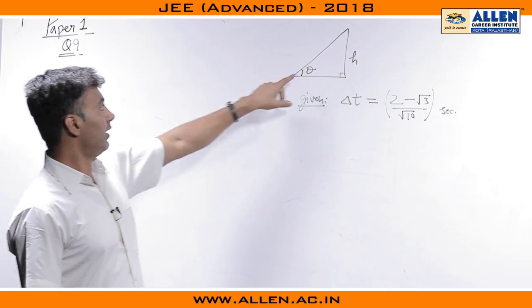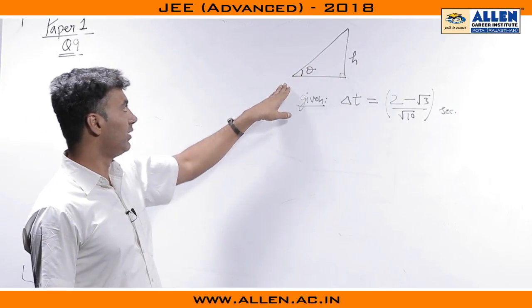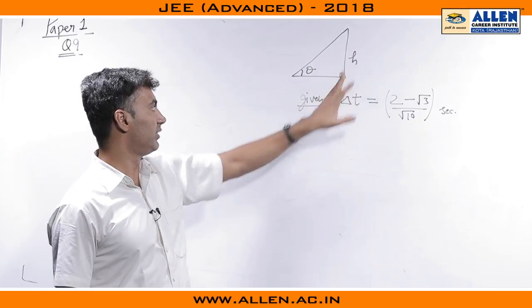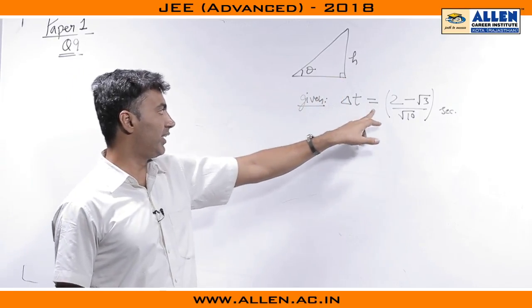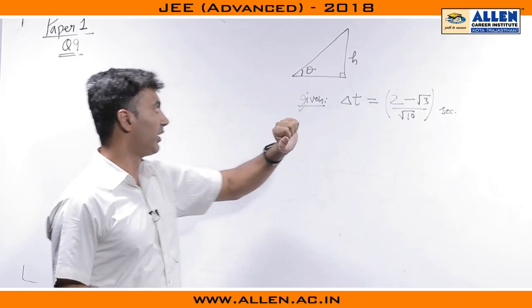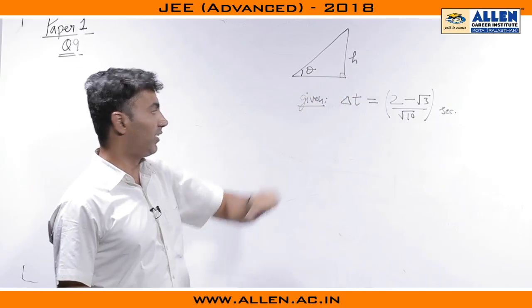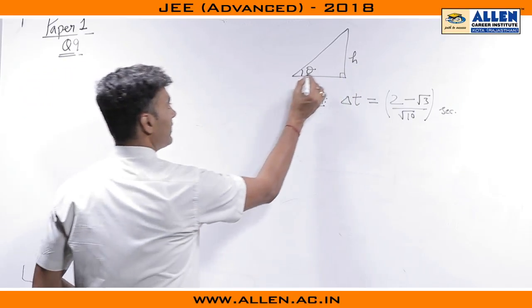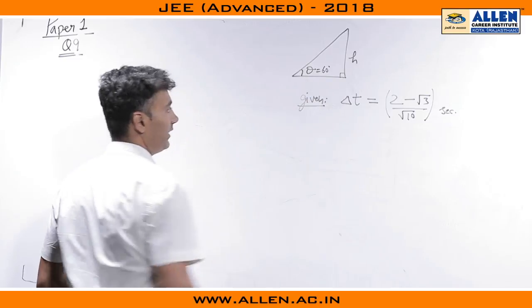So, question 9, paper 1. A ring and a disc were supposed to roll down an inclined plane of height h. The time difference was given as 2 minus root 3 by root 10, and they had expected us to find the value for h. Theta was given as 60 degrees.